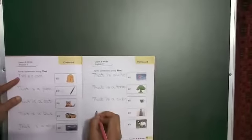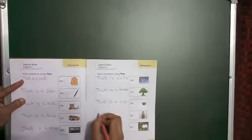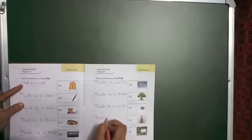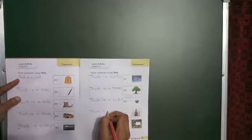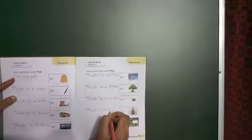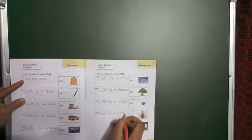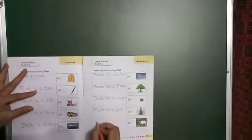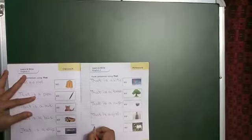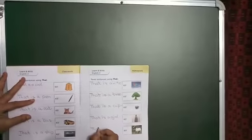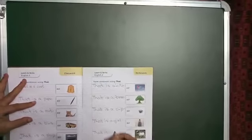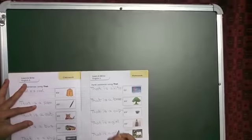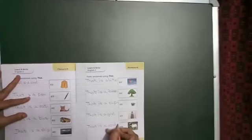Fourth picture is that is a girl. And last one is that is a goat. Repeat again.